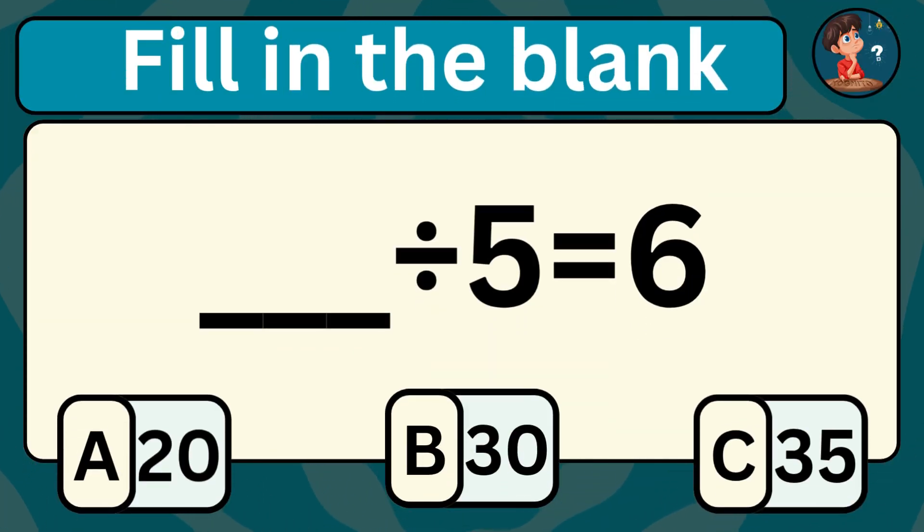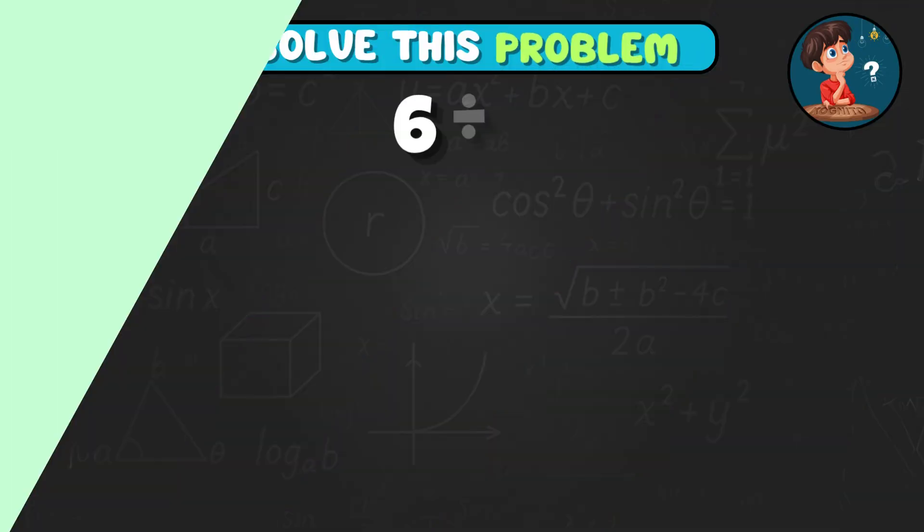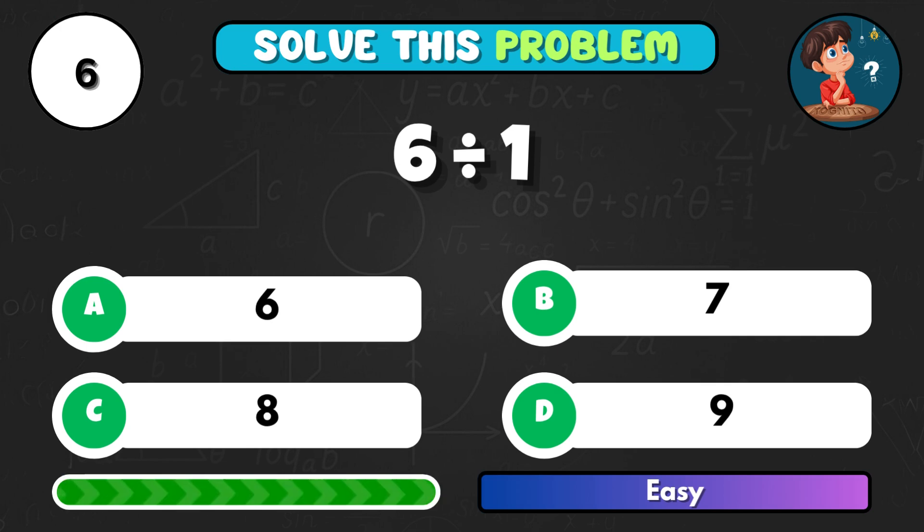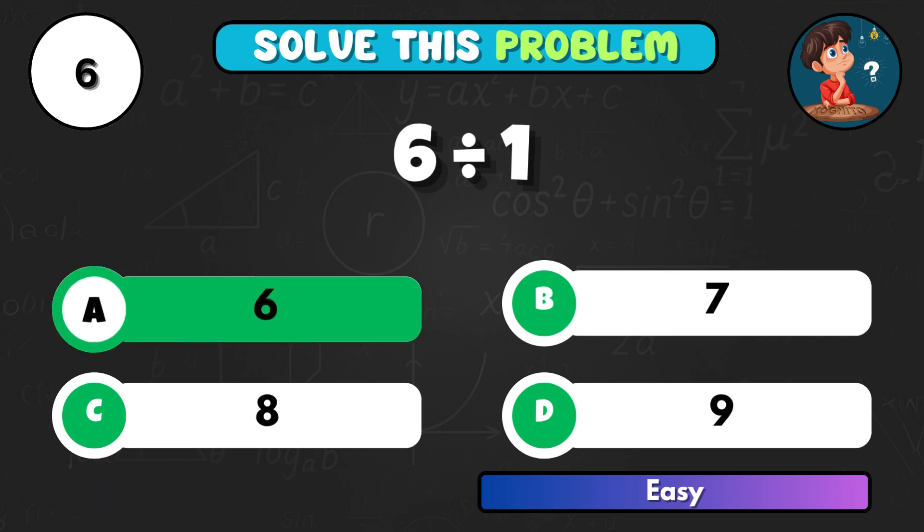What number divided by 5 equals 6? If 6 candies are shared among one person, how many do they get? That's A and the answer is 6.